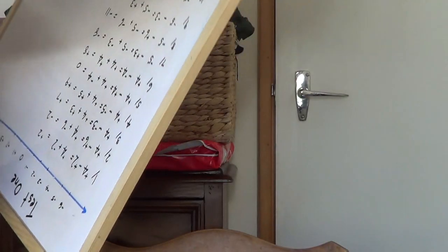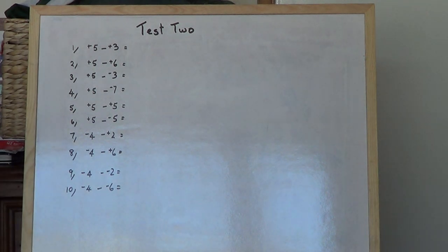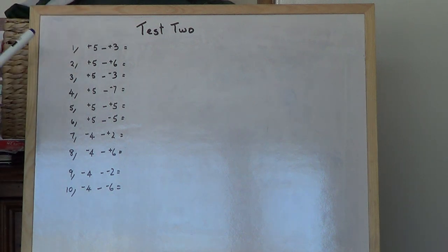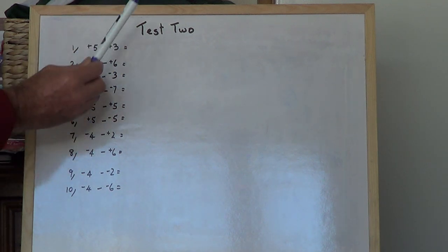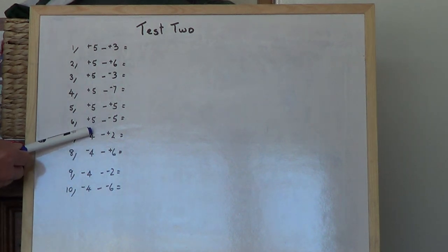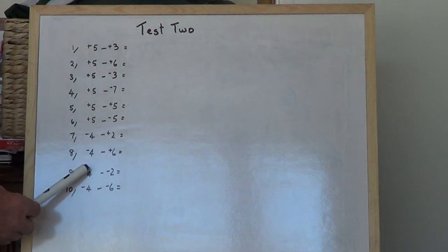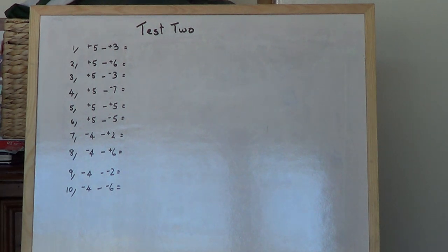Now we've got Test 2 — another opportunity to get it all right. The first 6 questions start with positive 5: positive 5 take away positive 3, take away positive 6, take away negative 3, take away negative 7, take away positive 5, and take away negative 5. The next 4 start with negative 4: negative 4 take away positive 2, take away positive 6, take away negative 2, and take away negative 6. Pause the video, work them out, then start the video again to check the answers.